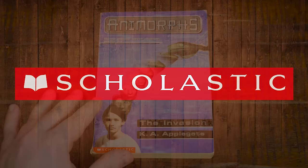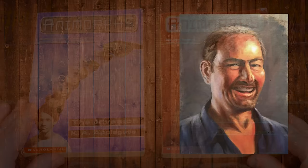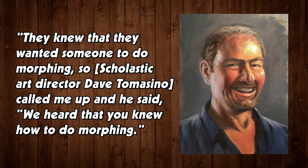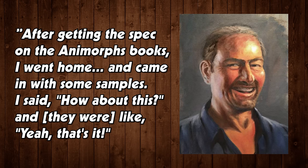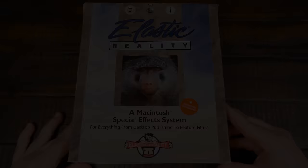That's where publisher Scholastic comes in. They'd already published the first Animorphs books that summer but weren't 100% pleased with the covers. According to Mr. Mattingly, the first three Animorphs books were done by another artist, but Scholastic wasn't happy with that artwork. They knew that they wanted someone to do morphing, so Scholastic art director Dave Tomasino called me up and said, 'We heard that you knew how to do morphing.' I just had bought a copy of this very primitive morphing program, the only one available at the time called Elastic Reality. And after getting the spec on the Animorphs books, I went home and came in with some samples. I said, 'How about this?' And they were like, 'Yeah, that's it!'